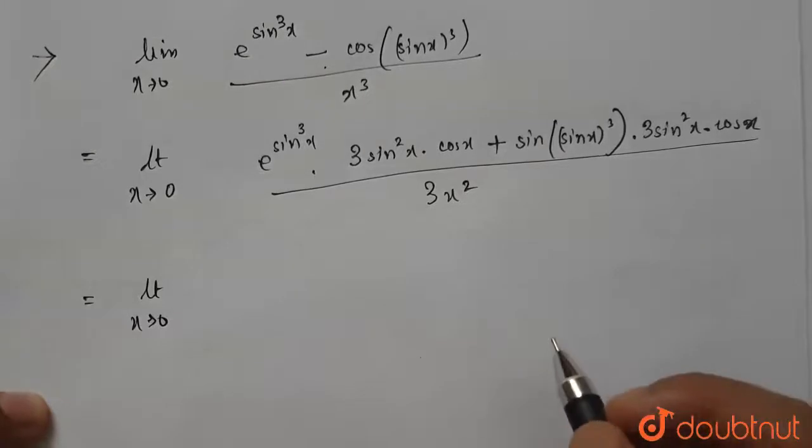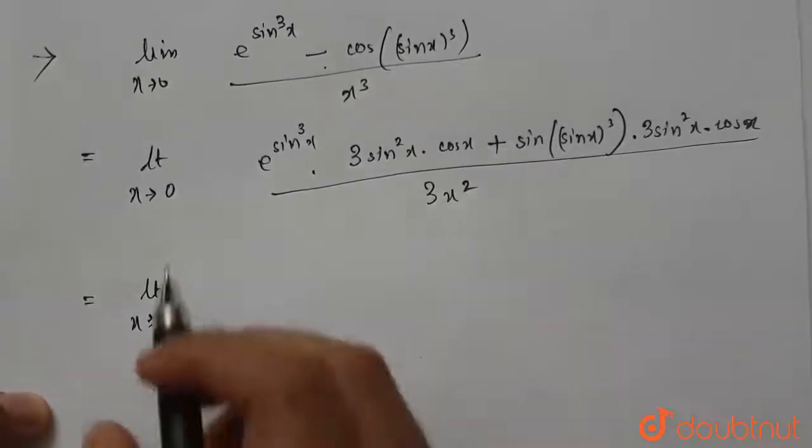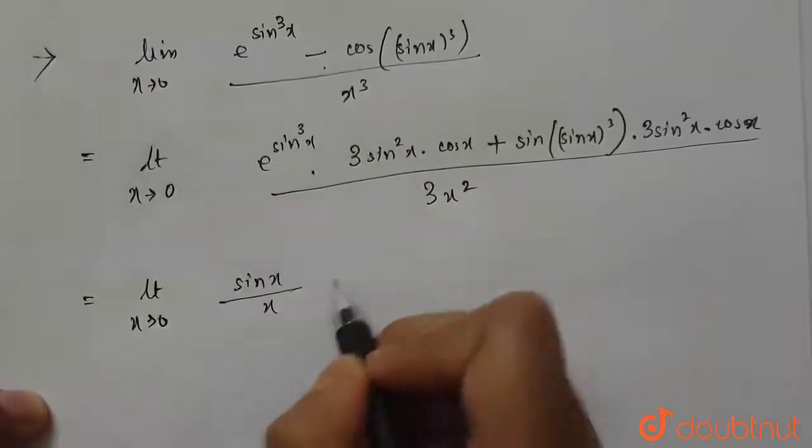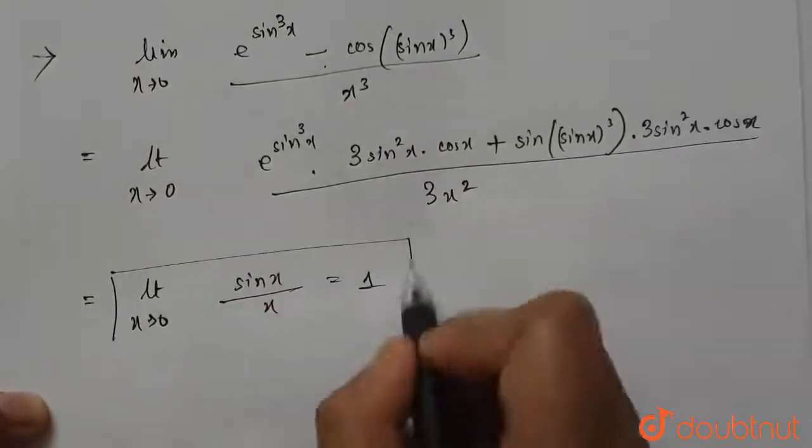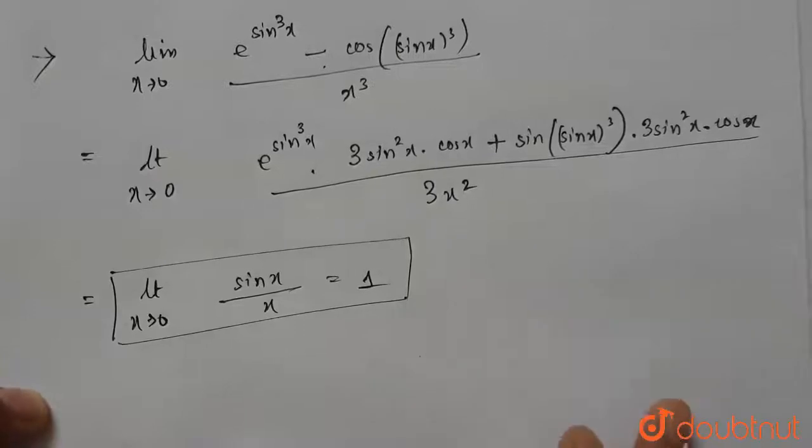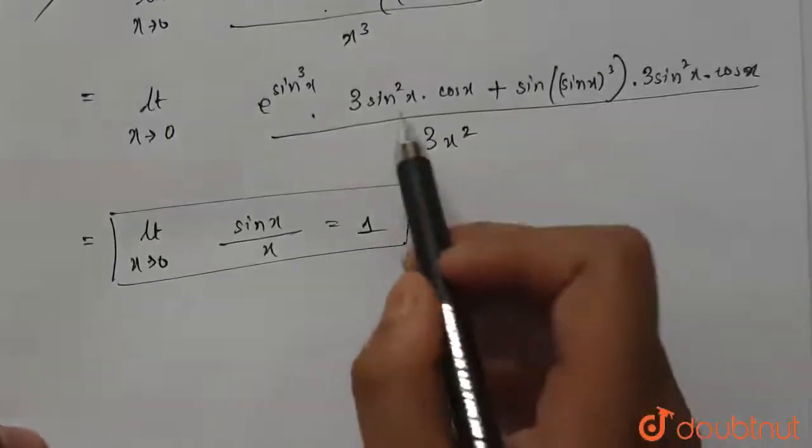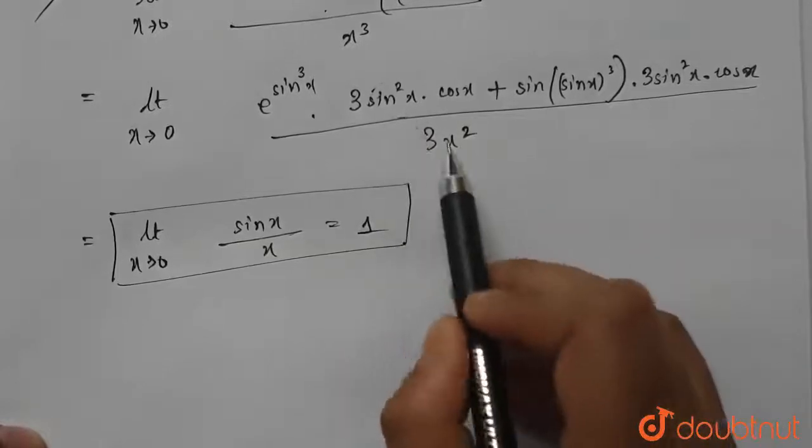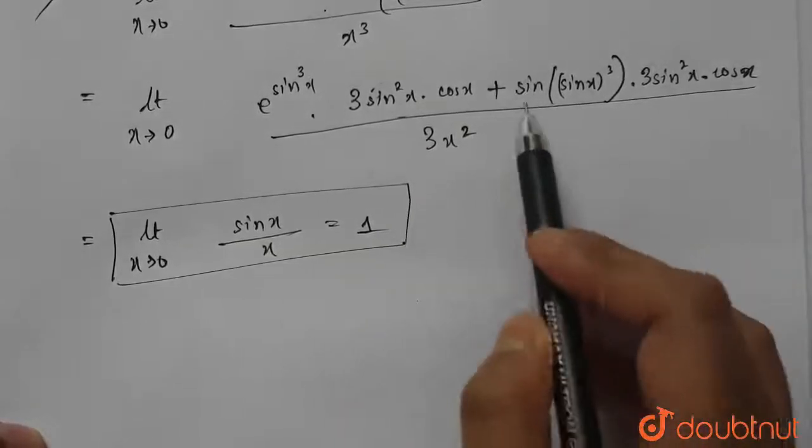—we know there is a property of limits where limit x→0 of sin x/x equals 1. We will use this property to solve this part. So now we can write sin²x / x² as one part and the other as another part.